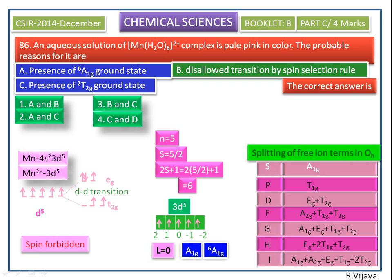Now we check out the answer. Among these two, that is A and C, A is the correct option. That is, presence of 6A1g ground state. C is not the correct answer.